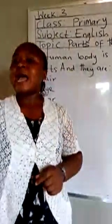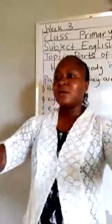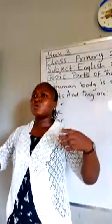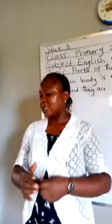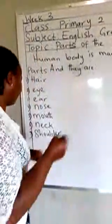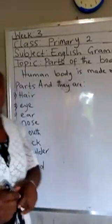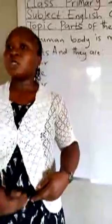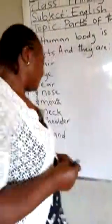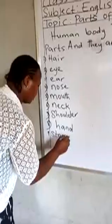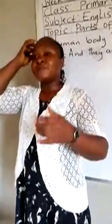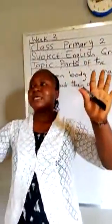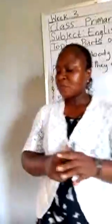Another part of the body is the hand. Show me your hand. We have two hands. What do we do with our hands? We use our hands to do different things — we use them to write, to carry loads, to wash. Another part of the body is the fingers. Show me your fingers. This is my fingers. I have ten fingers.